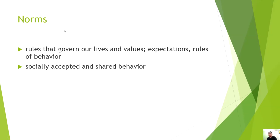Before discussing deviance, we need to understand norms. Norms are rules that govern our lives — expectation rules of behavior. Simply put, norms are socially accepted and shared behavior. As long as you exhibit the same behavior within the group or society, that is considered a norm. The opposite of conforming to norms brings us to deviance.